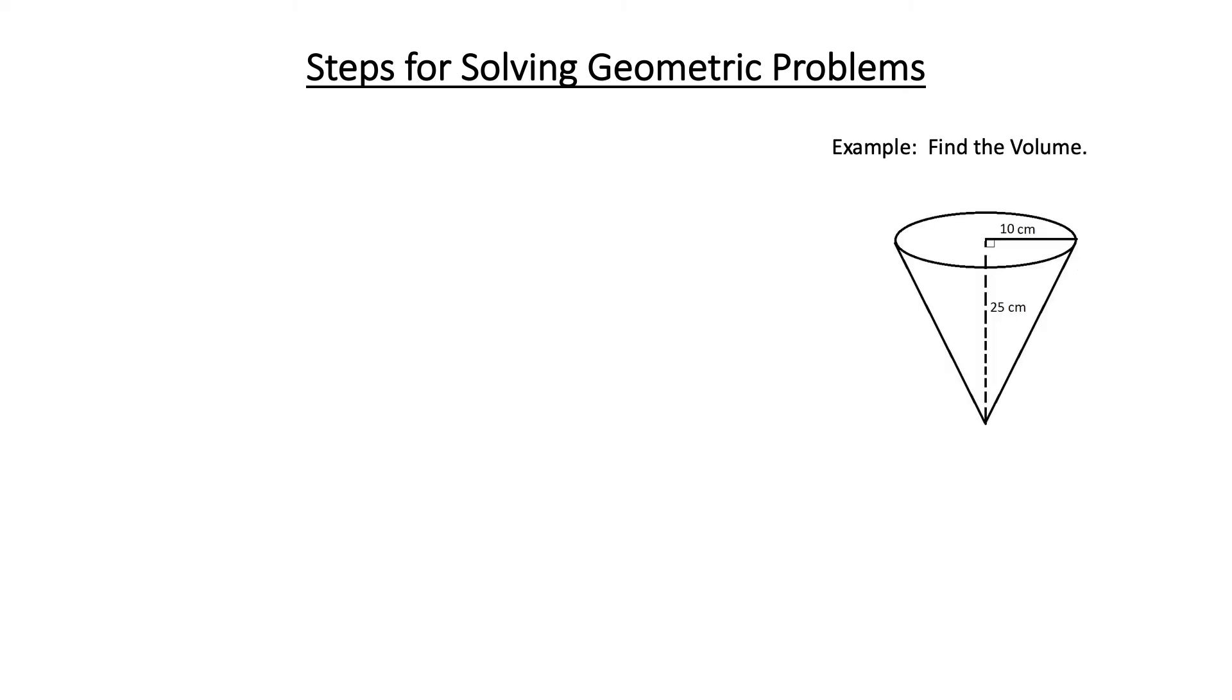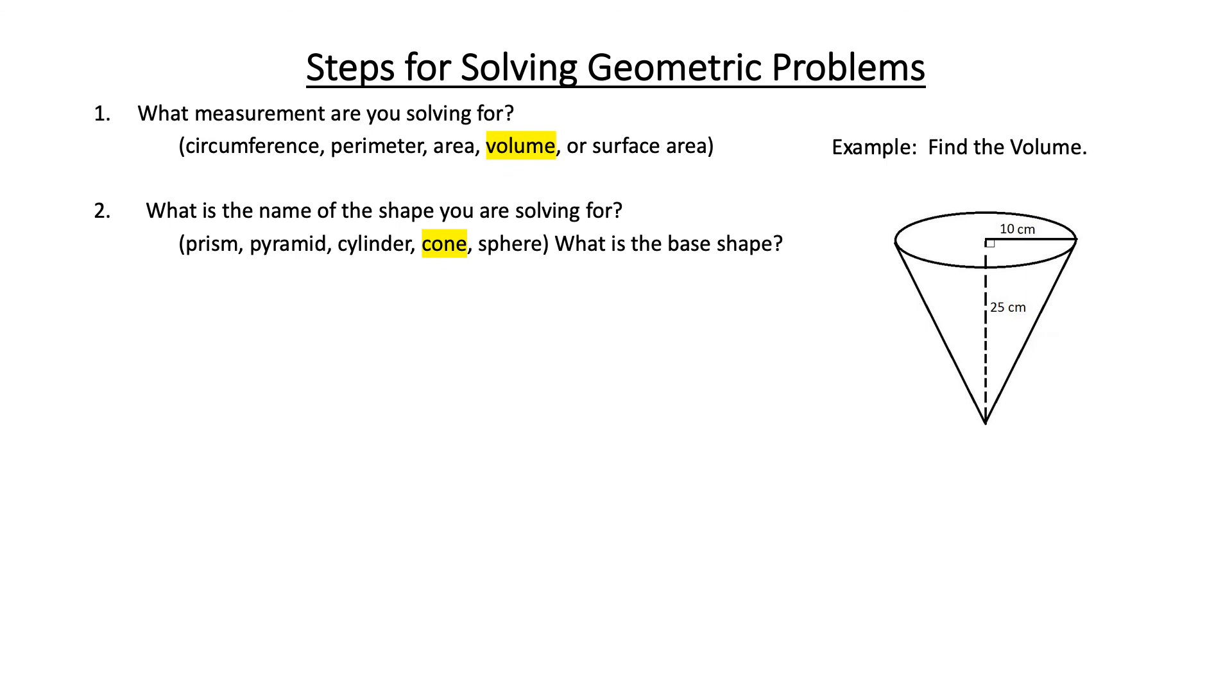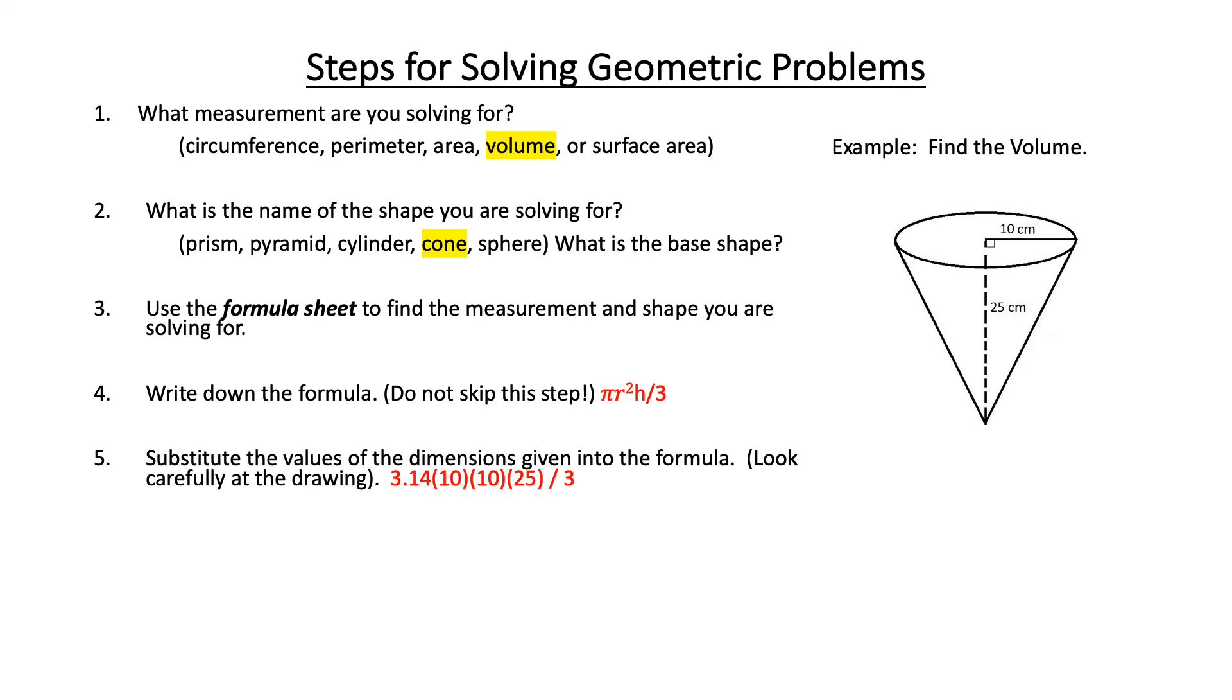One more quick example. We see we're solving for volume. We have a cone. We find the volume of a cone. The formula pi r squared h divided by 3. Substitute the values and solve. Then label the measurements. So when we go through that problem quickly, you see that it becomes easier and easier the more that we solve these problems.